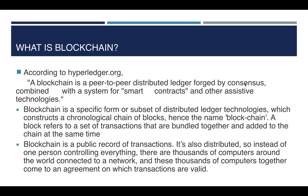Forged by consensus: what is transactional data that has to be stored in the distributed ledger is decided by a process called consensus. Smart contracts are the programs that we place on the network, and when certain conditions are met, smart contracts will execute on their own. Other assistive technologies refer to existing technologies that blockchain uses, like peer-to-peer network, digital signature, hashing algorithm, and so on.